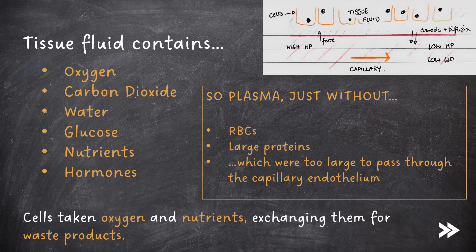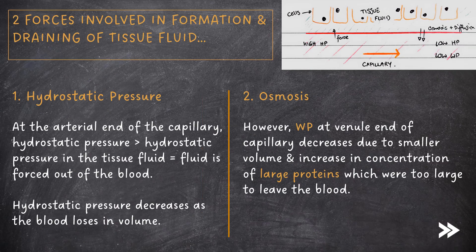Cells take in oxygen and nutrients, exchanging them for waste products. There are two main forces involved in the formation and draining of tissue fluid. First, hydrostatic pressure: at the arterial end of the capillary, the hydrostatic pressure is higher than the hydrostatic pressure in the tissue fluid. This means that fluid is forced out of the blood, and the hydrostatic pressure decreases as the blood loses volume.